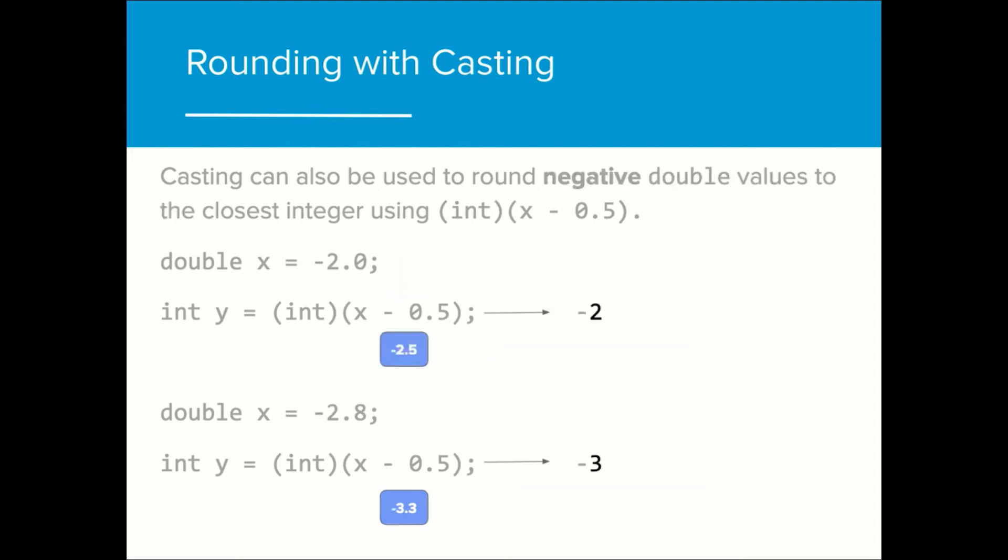The same strategy for rounding positive numbers can be used to round negative numbers. In this case, the expression is int(x - 0.5) so that the 0.5 value is decreasing the value of x.